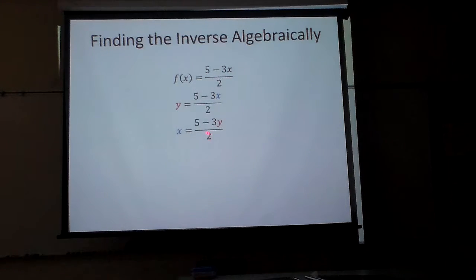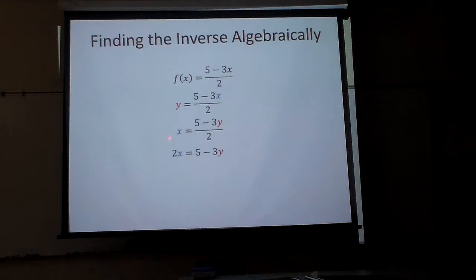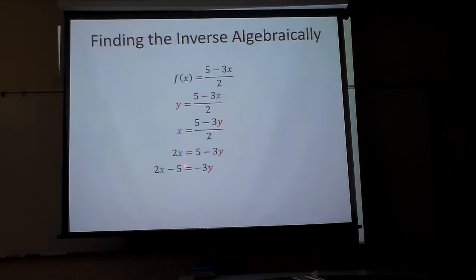Well, what am I doing to each side first? I'm dividing by two, so I probably would multiply each side by two. If I multiply each side by two, that two will cancel, and I can have two x here. Now I have this five minus three y. Let's subtract five from each side. And now I'm going to divide by negative three.